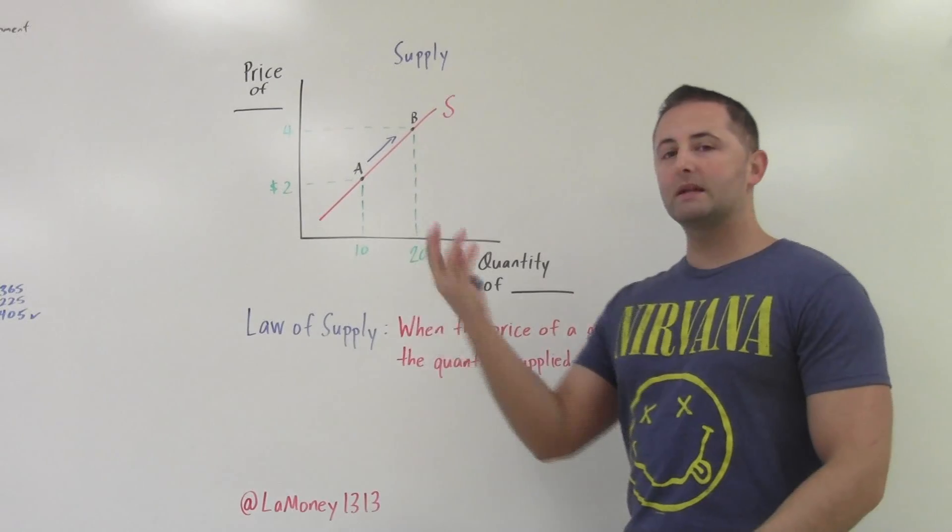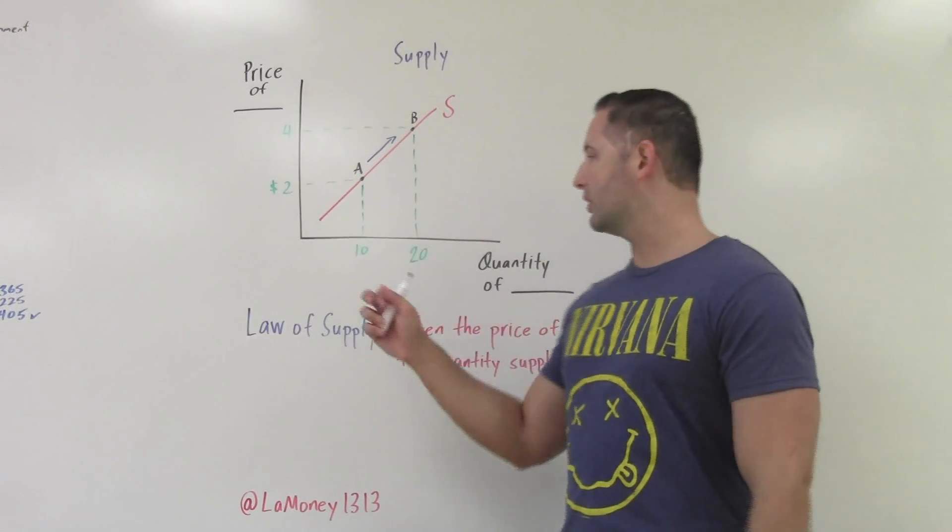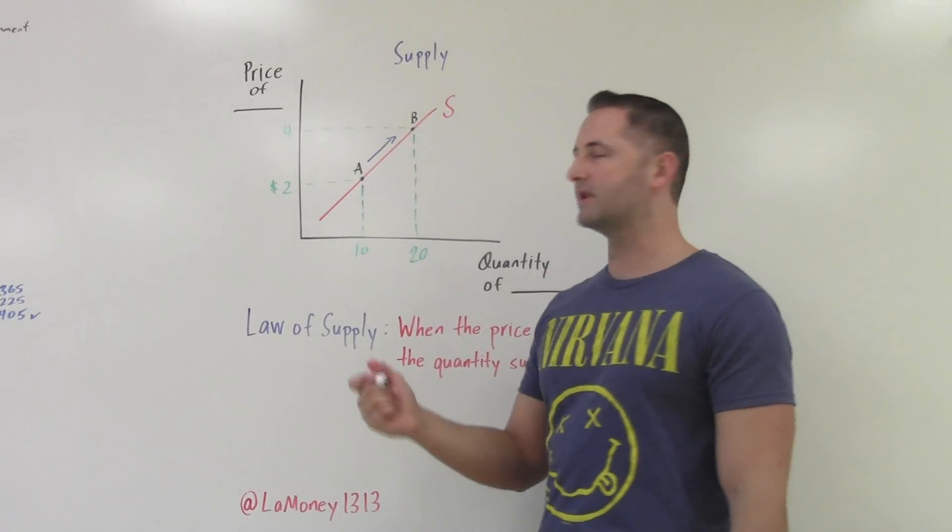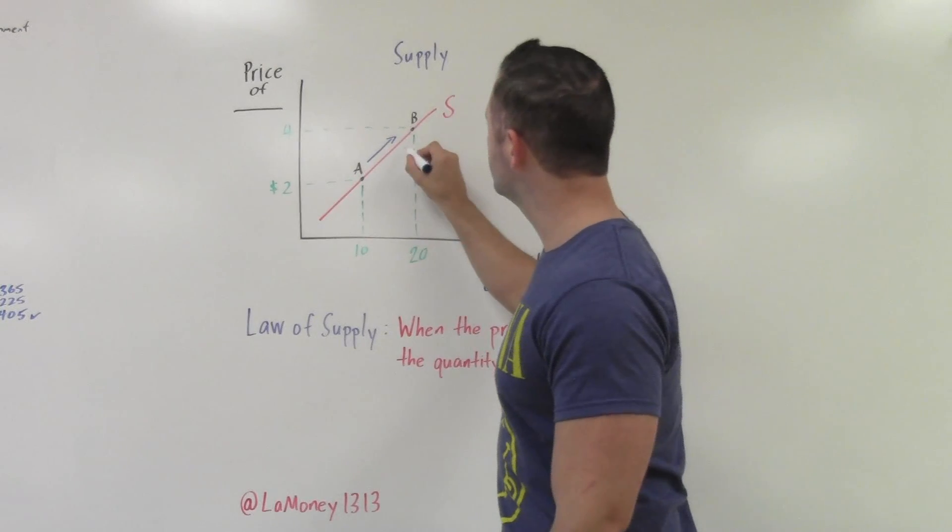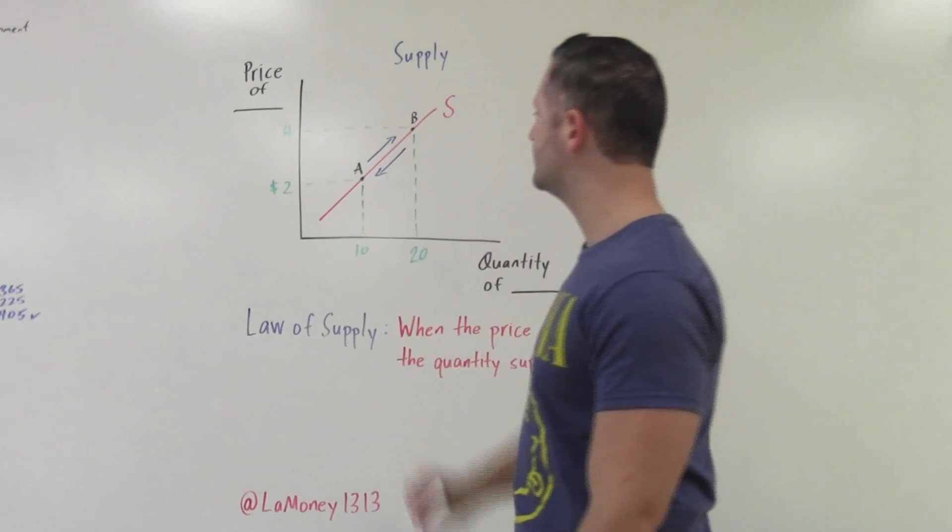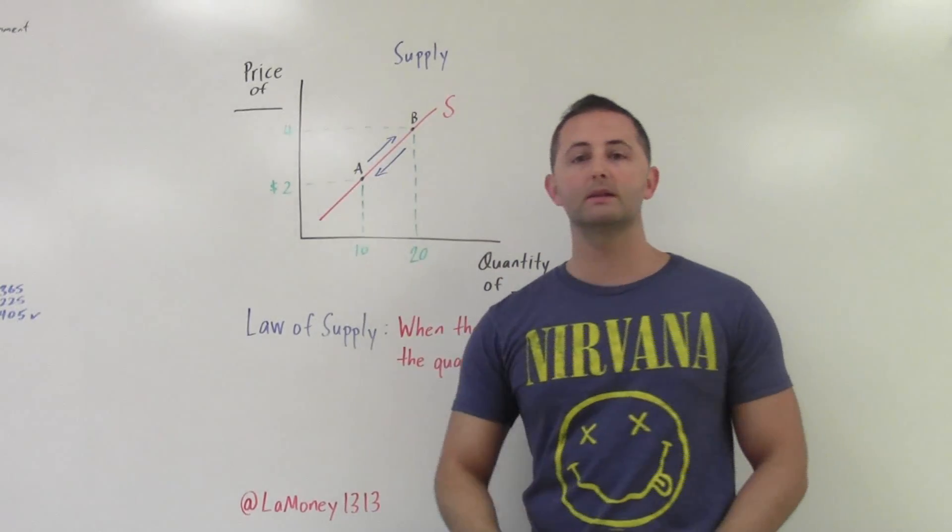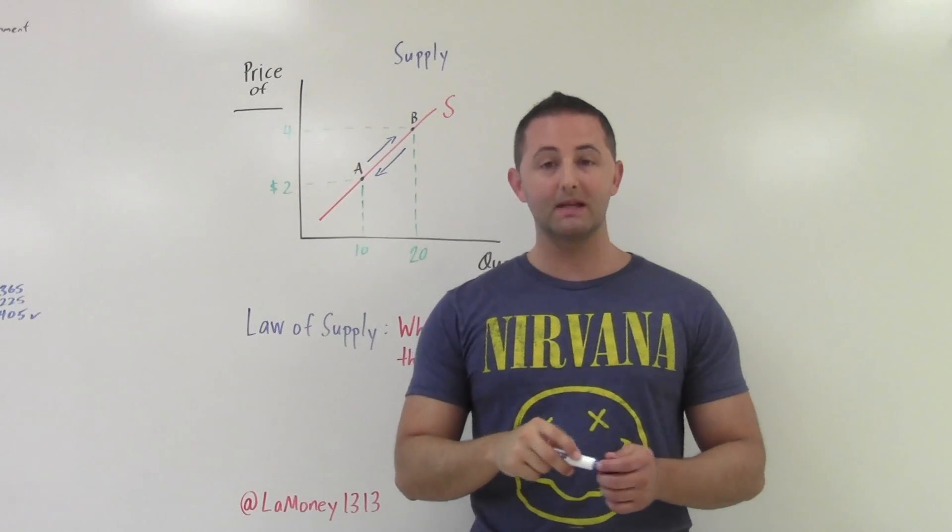At point B, the price doubles, goes to $4. So guess what? We are now willing to supply 20 of this particular good or service. And then we can have a downward movement, which would be the opposite, where the price decreases and so does the quantity supplied.